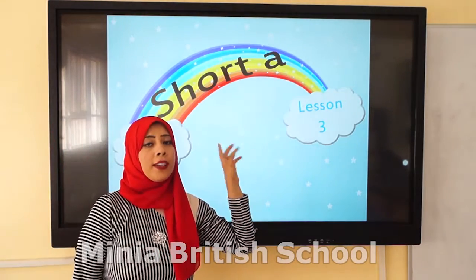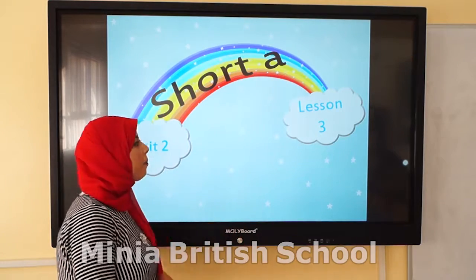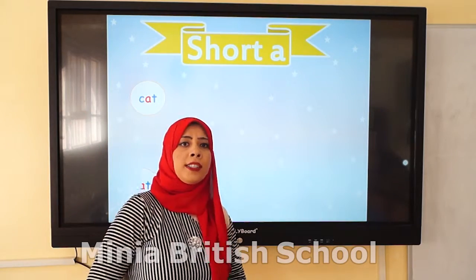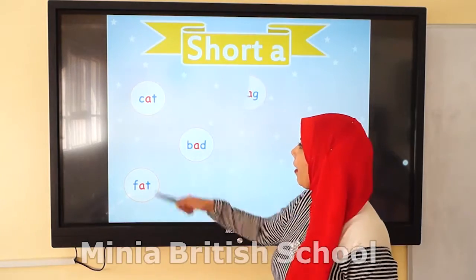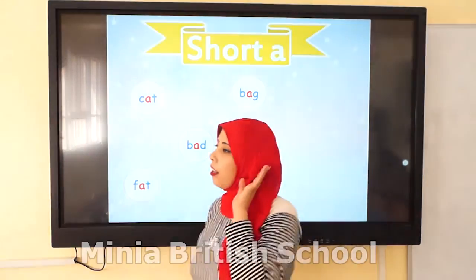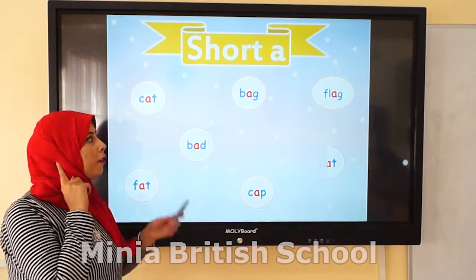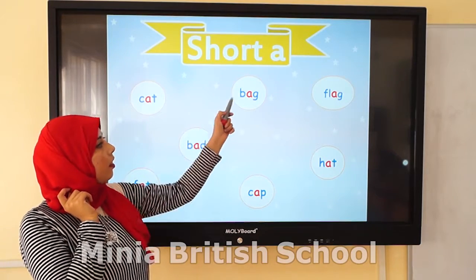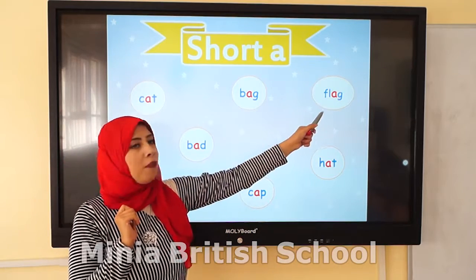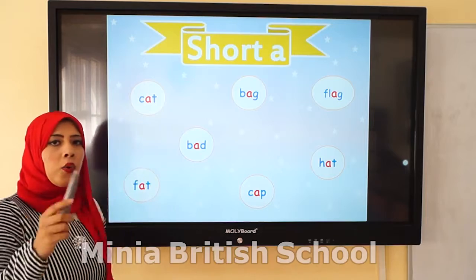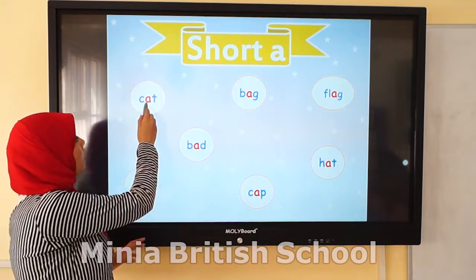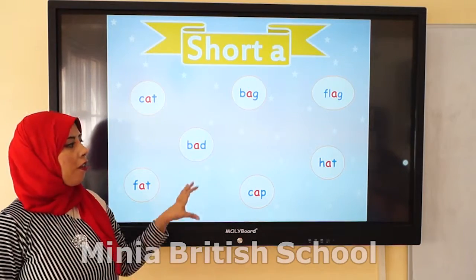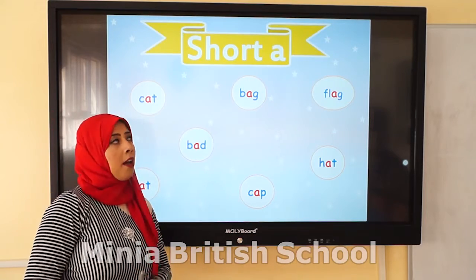This lesson is about short A. Let's see the words that have short A. Pay attention and let's take it carefully: cat, fat, bad, bag, cat, flag, hat. If you look at them, you will see the short A sound repeated. So these are the words that have short A.